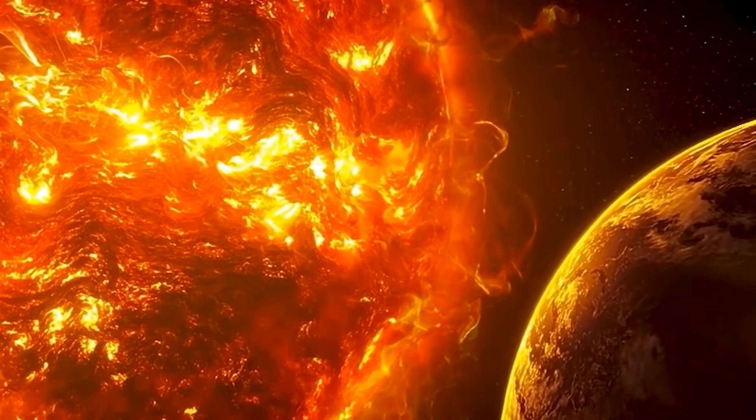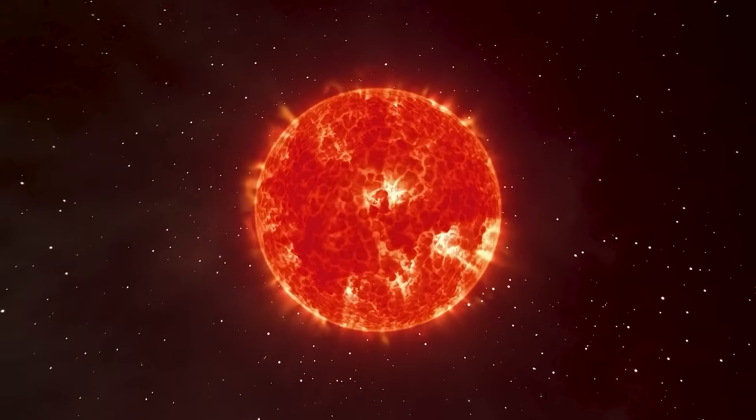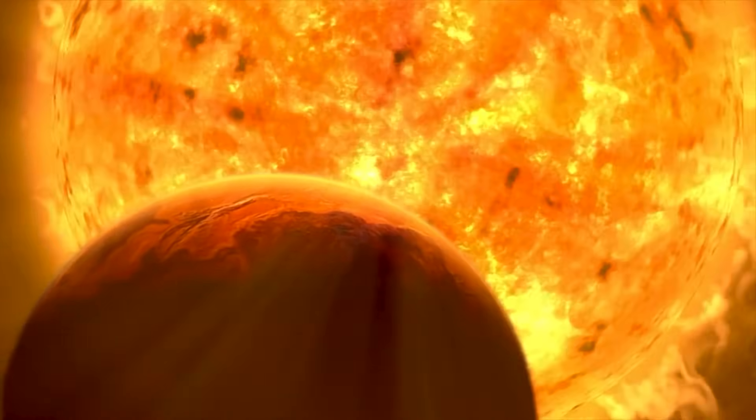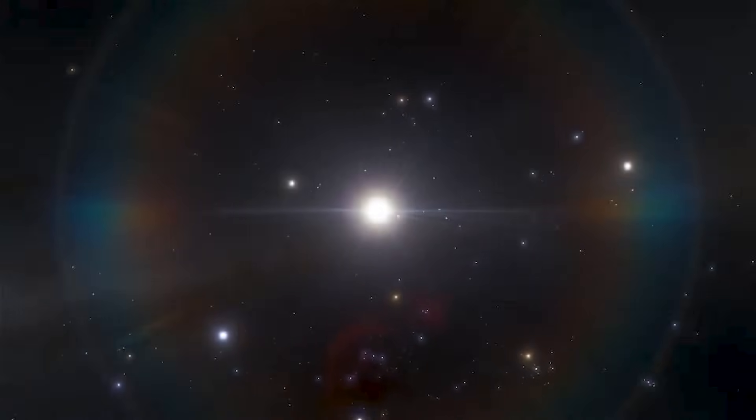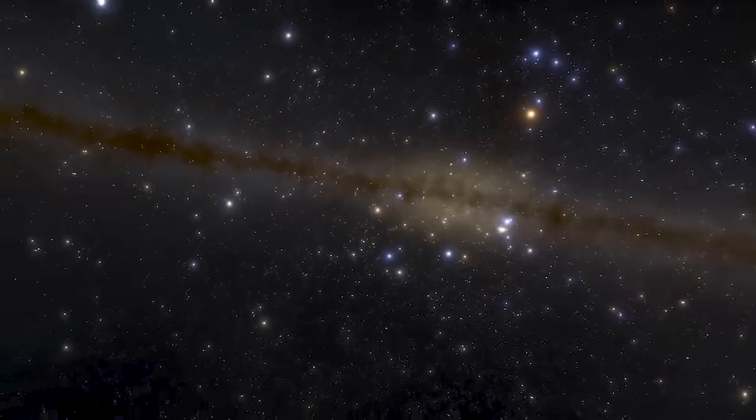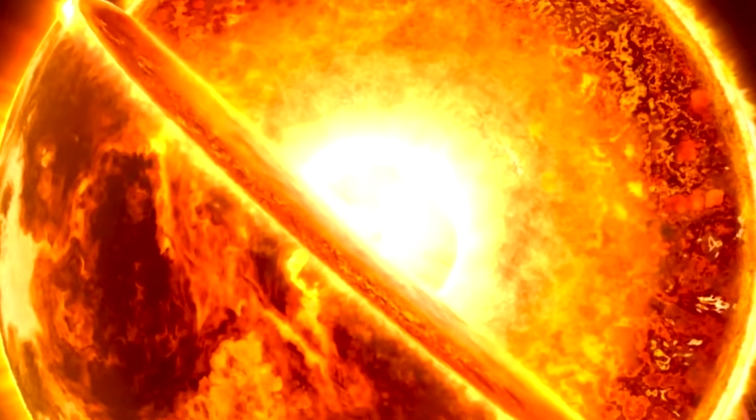UY Scuti is so big because it is dying. It has become a red supergiant, a type of star that rapidly expands once it runs out of fuel. This stellar giant has undergone an extraordinary journey over approximately 8 million years. As it nears the end of its life, UY Scuti has nearly consumed its hydrogen and helium fuel, and is now fusing heavier elements in its core.